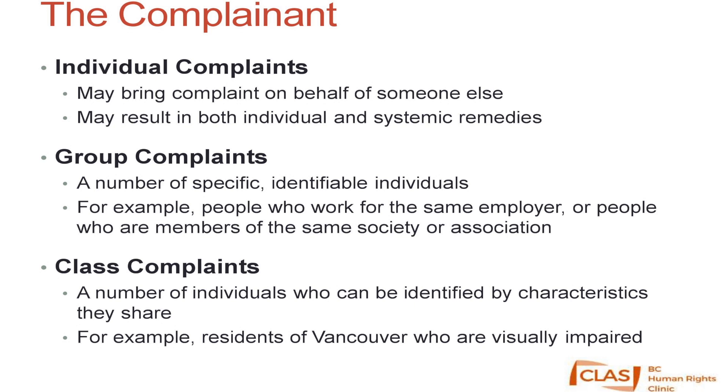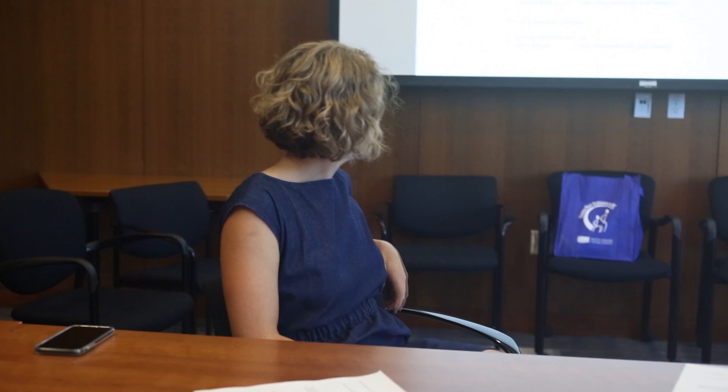In a class complaint, perhaps those individuals want to argue that the transit system does not accommodate their needs as visually impaired people. The class is defined by characteristics — visually impaired, living in the Lower Mainland, using transit — but when we file that complaint, we don't know exactly how many people are in that class. The fourth kind of complaint is a retaliation complaint. If you file a human rights complaint, or even just tell your employer or landlord that you might make one, the Human Rights Code protects you from retaliation.